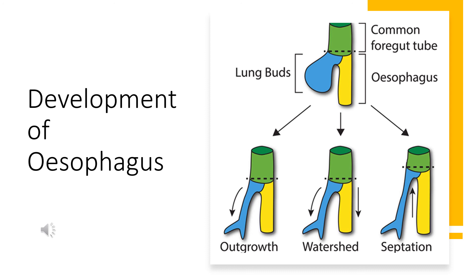The esophagus is developed from the dorsal part of the foregut. At first the esophagus is rather short, but with the descent of the heart it lengthens rapidly. The muscular coat of the esophagus, formed by the surrounding visceral mesoderm, is striated in its upper two-thirds and is innervated by the vagus nerve, whereas the muscle coat is smooth in the lower one-third and is innervated by the splanchnic plexus.